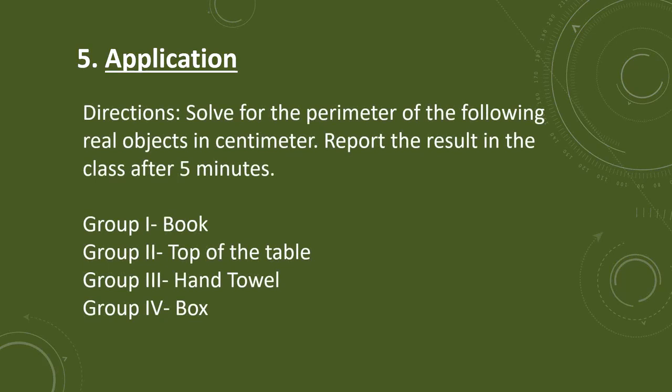For the application, the learners will do a group activity and solve for the perimeter of real rectangular objects that can be found inside the classroom. They will also report it afterwards. For group 1, they are going to measure and solve for the perimeter of a book. For group 2, top of the table. Group 3, hand towel. And for group 4, a box.